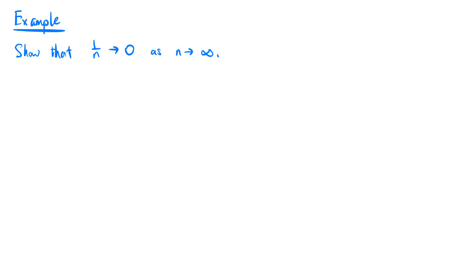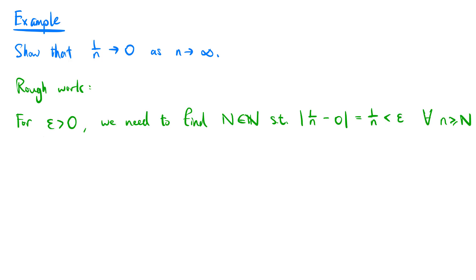Let's see an example of trying to prove that a sequence is convergent using the definition. We want to show that 1 over n converges to 0 as n tends to infinity. That is, for epsilon greater than 0, we need to find a natural number N such that the absolute value of 1 over n minus 0, which equals 1 over n, is less than epsilon, for all n greater than or equal to N.